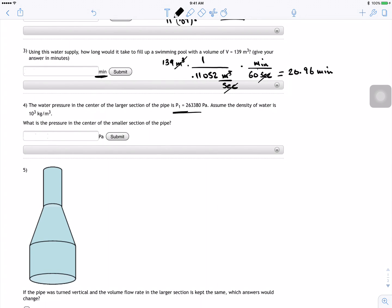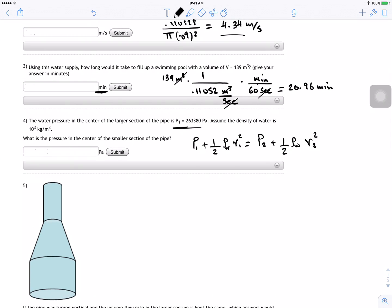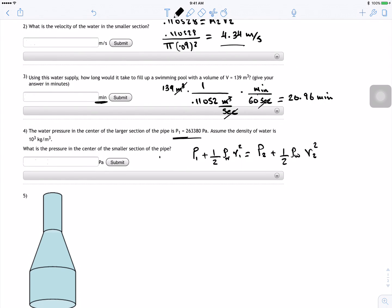All right, the water pressure in the center of the larger section. They give a pressure in the larger section and assume the density of the water is 10 to the power 3 kilograms per meter cubed. What's the pressure in the center of the smaller section of the pipe? So basically we're just using this equation, which is P1 plus half density of the water V1 squared.